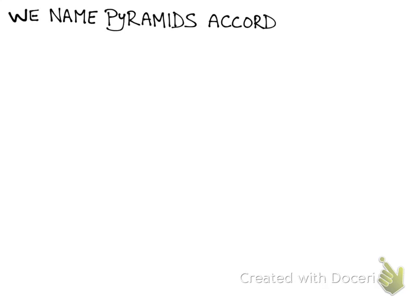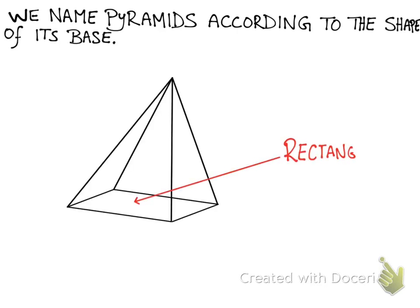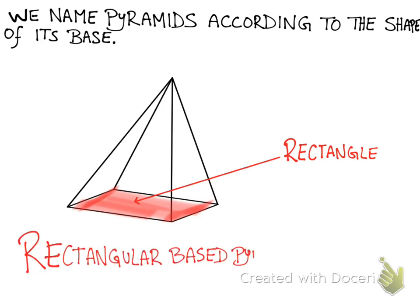We name the pyramids according to the shape of their bases, very much like prisms. This pyramid has a rectangular bottom, so we call it a rectangular based pyramid.